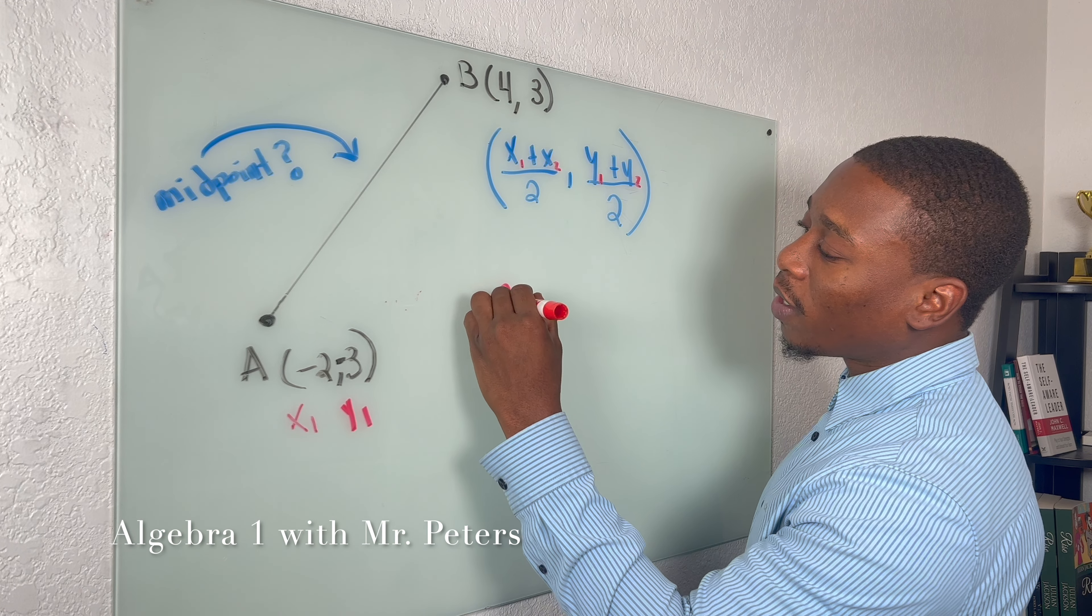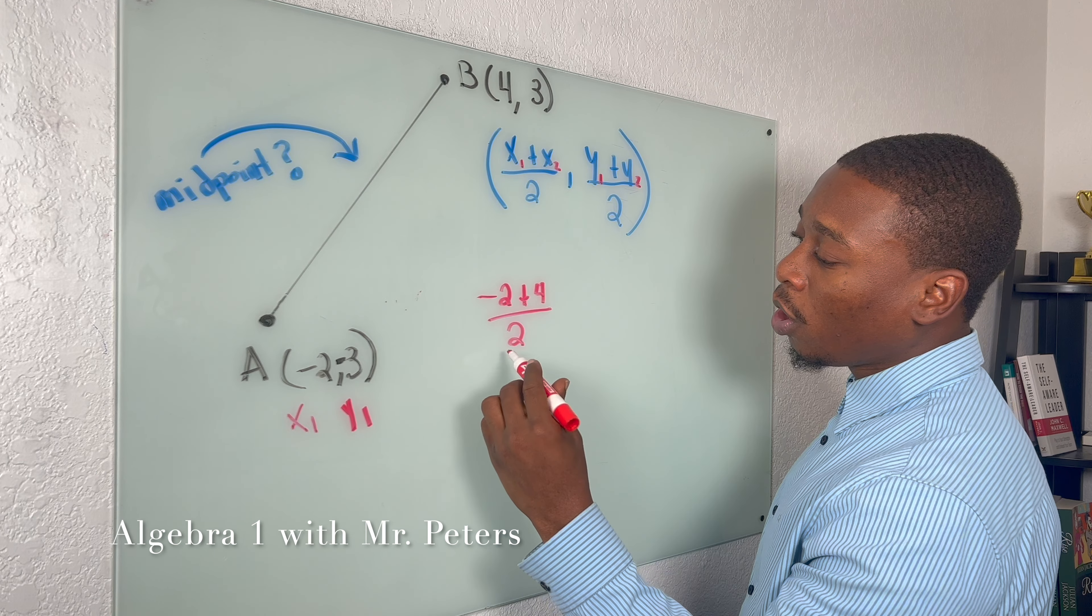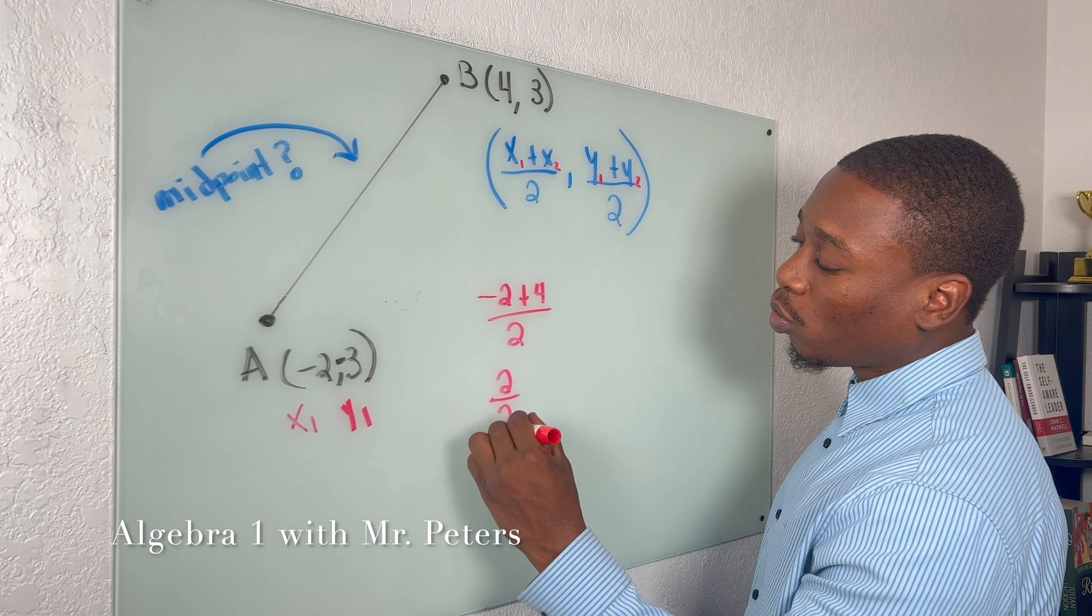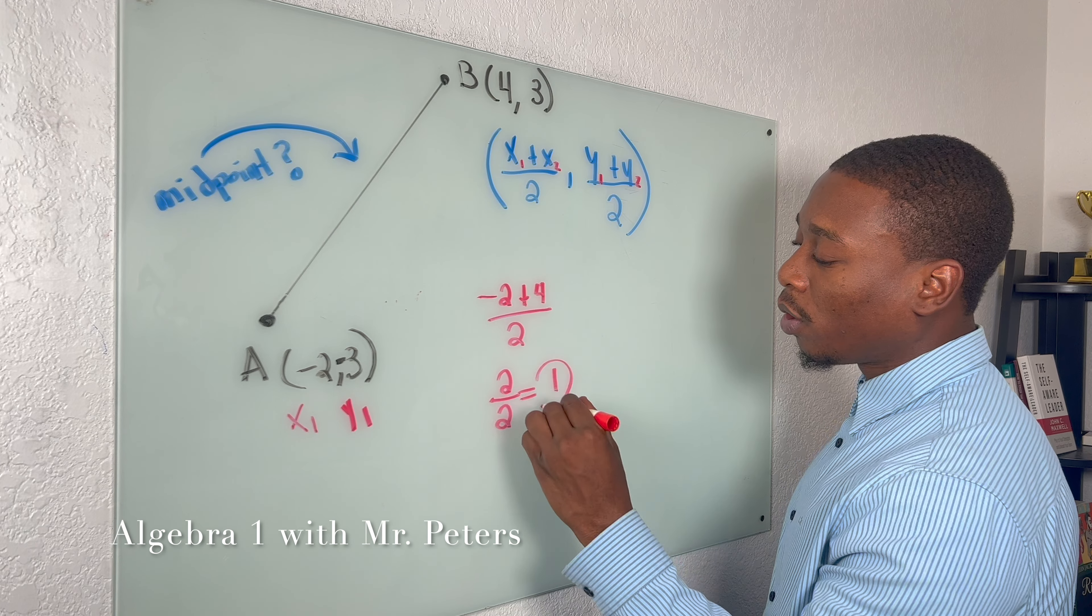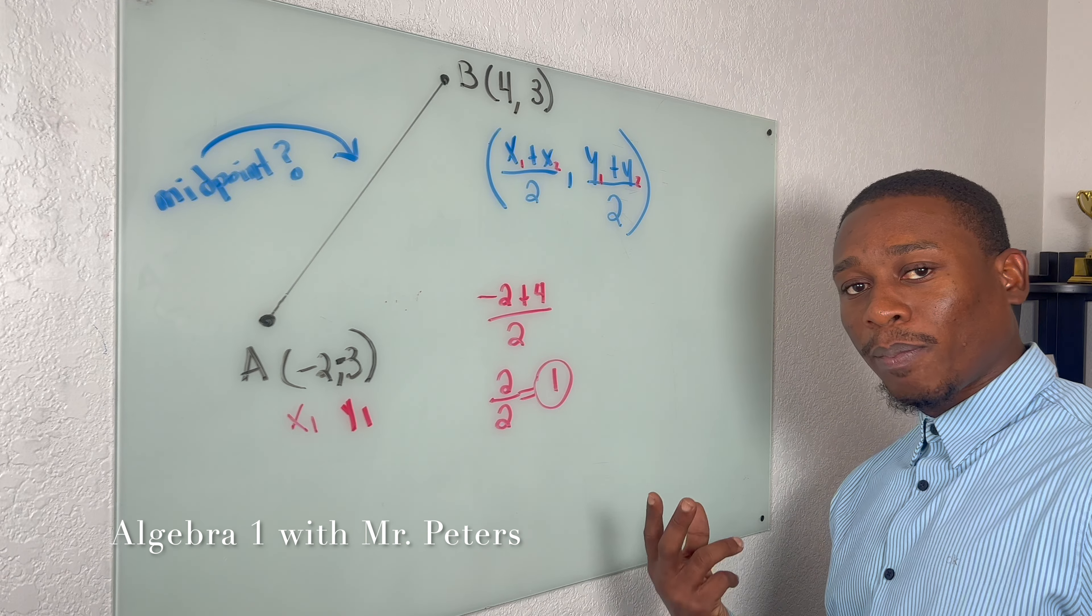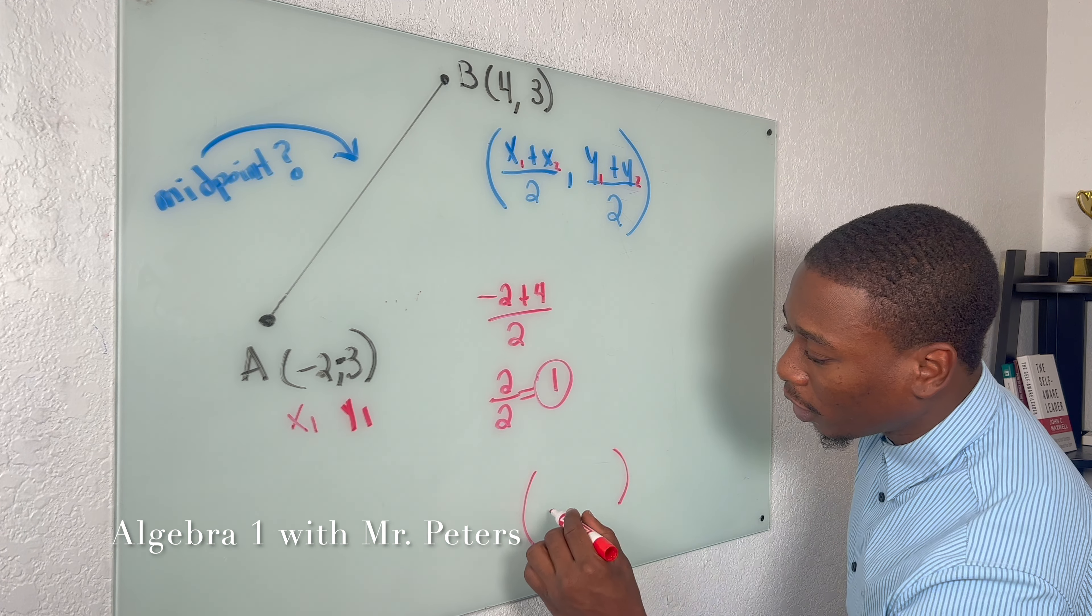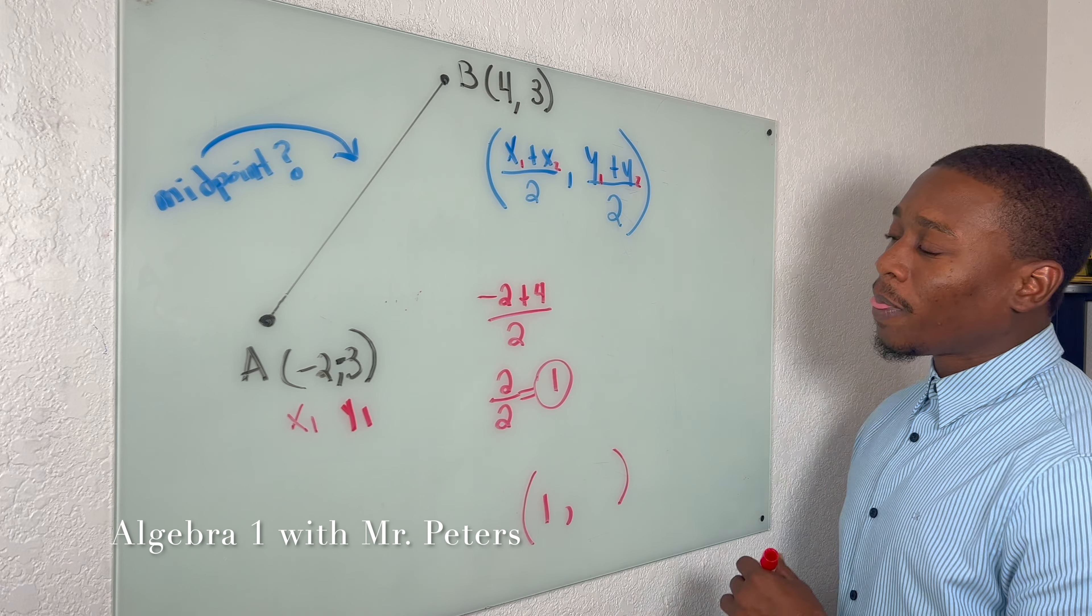So when we're going in for x, we have (-2 + 4) all over 2. When we simplify, we're going to have 2 over 2, which is just 1. Please understand that our answer is a pair, a coordinate pair, meaning an x and y value. So let's put our parentheses down here and we have our x.